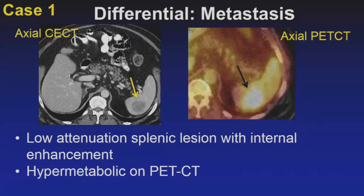Metastatic disease can occur in the spleen and has been described with breast, lung, colon, and skin cancers such as melanoma. Splenic metastases usually occur in the setting of widespread metastases. This case was unusual — a patient with newly diagnosed melanoma underwent chest, abdomen, and pelvis imaging, and we found only one lesion: this low-attenuation lesion with some internal enhancement. On PET scan, it was the only FDG-avid lesion in the whole body. Isolated splenic metastases can occur but are rare.